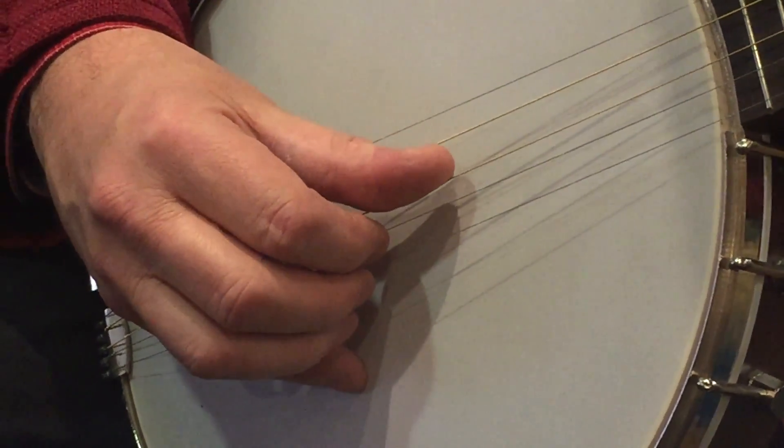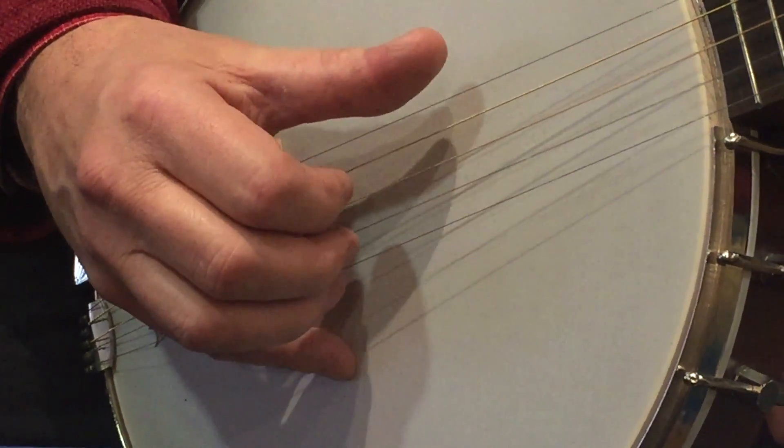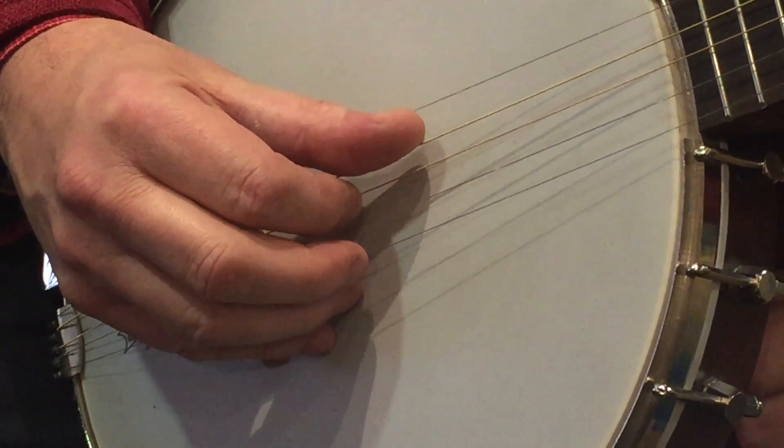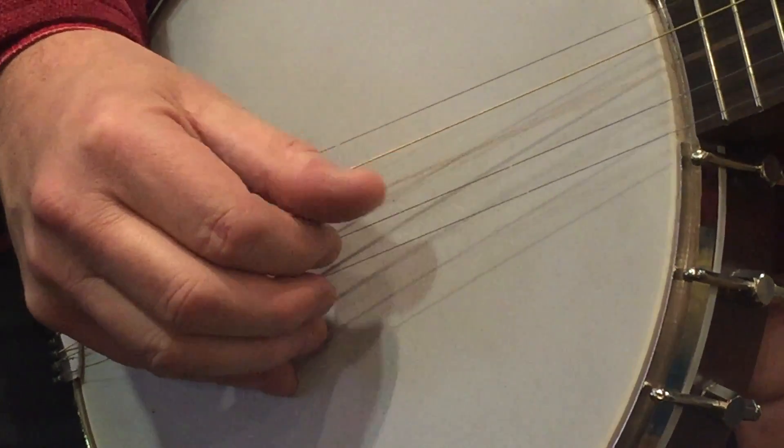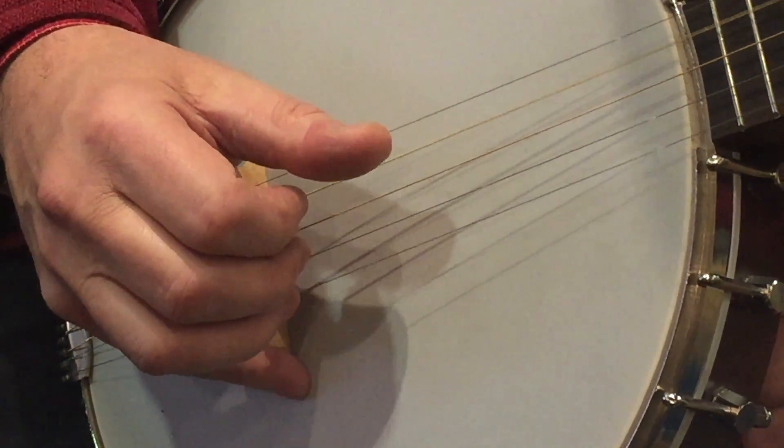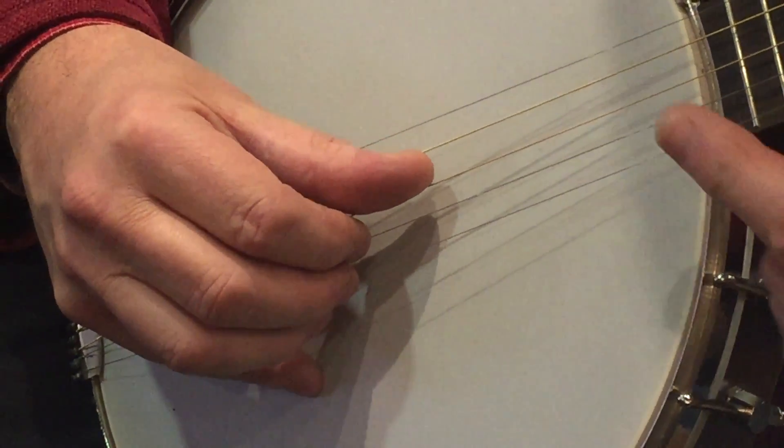And what you do is the first part of the roll, you start these two strings. And what we're going to do is we're going to alternate and move down to these two strings. So you get this effect. [demonstration] They're the low strings, and so you're alternating two of the notes.